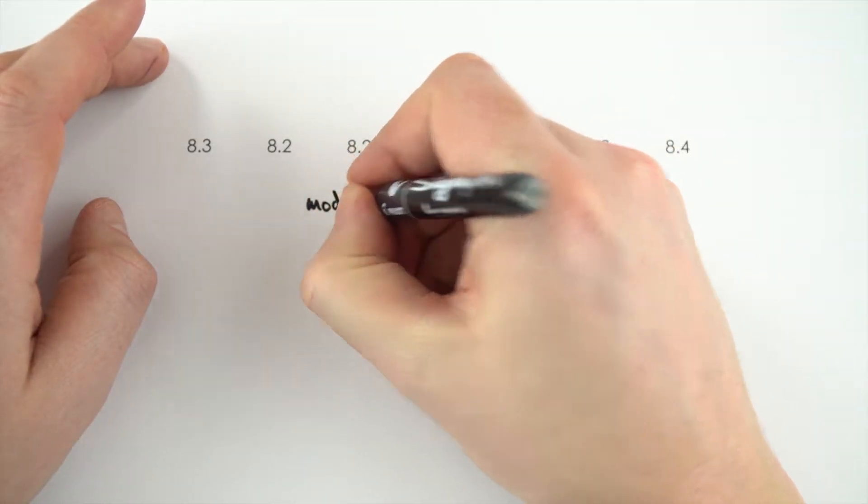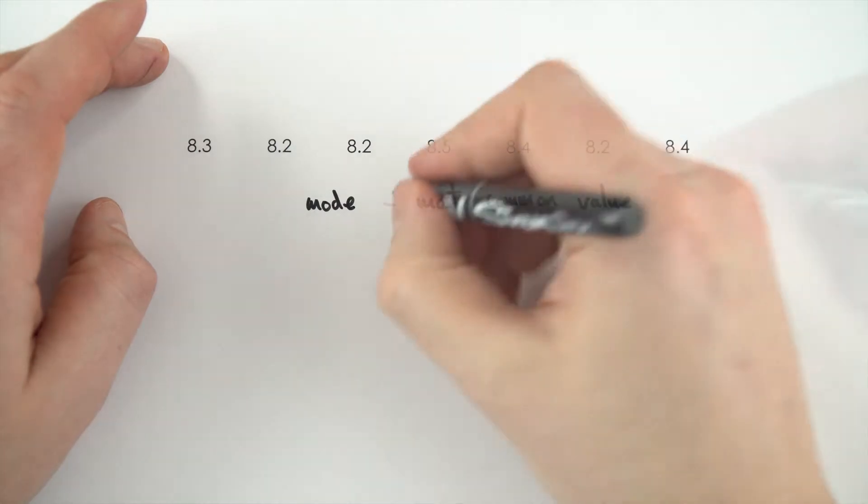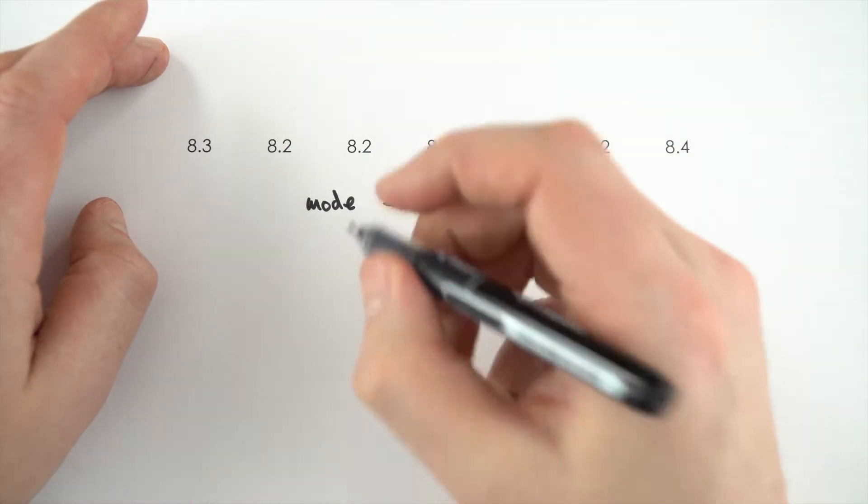Now the mode is a number which is the most common value, while the median is the middle value.